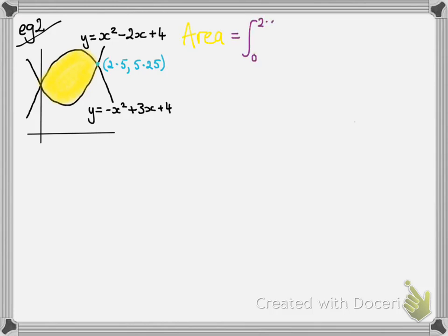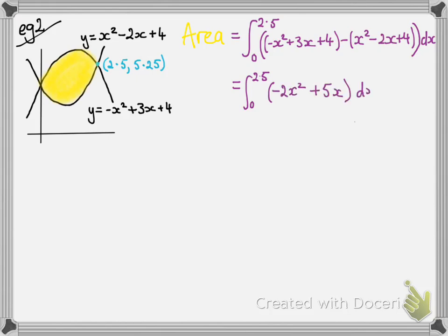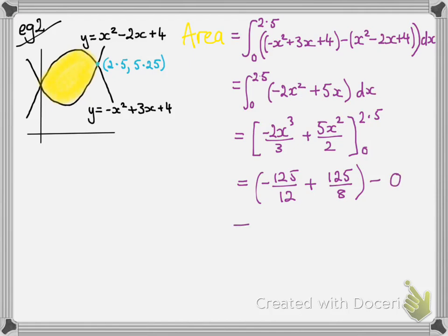So this time we'll think about our area as being the integral between those limits of 0 and 2.5, with our top curve subtracting the bottom curve. And we'll simplify that before integrating. And then that will do the whole thing of the top curve minus the bottom curve all in one go. So we found what that came to, integrated it, now we're substituting in those limits of 2.5 and 0 to get our final answer.